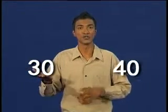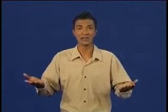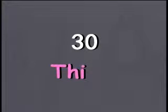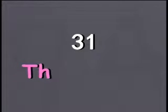We just counted numbers from 30 to 40 in ones. Now let's read the number names. 30 — T, H, I, R, T, Y. Thirty. 31 — T, H, I, R, T, Y, O, N, E. Thirty-one.